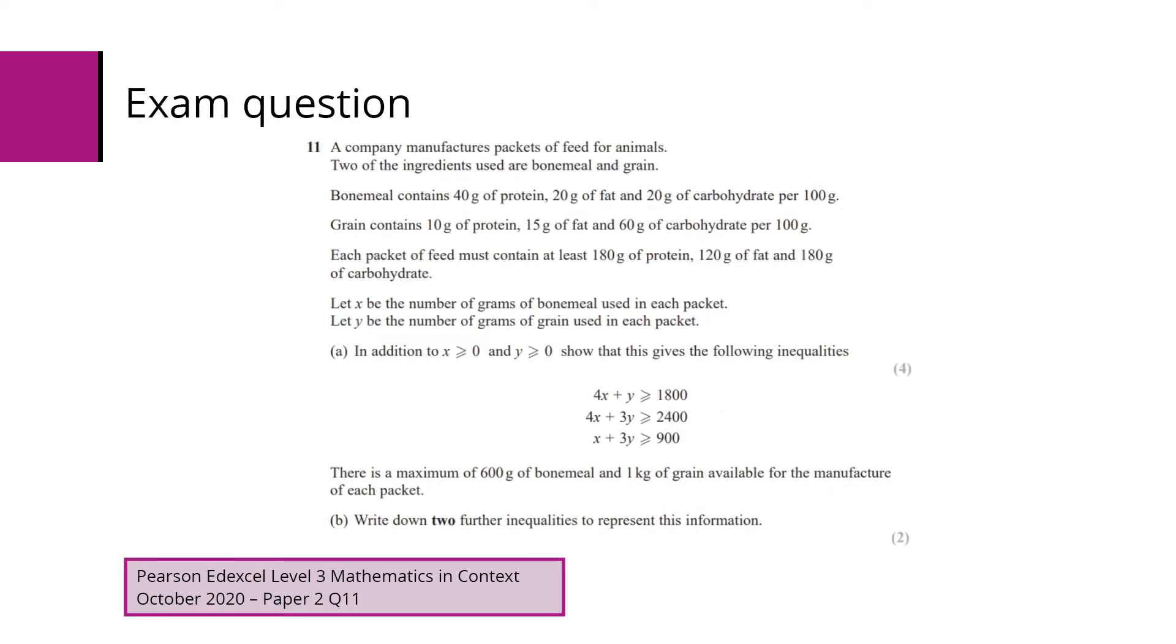So here's an exam question from 2020, paper 2, question 11. This one is about a company that manufactures packets of feed for animals. Two of the ingredients used are bone meal and grain. We've got the amounts of protein, fat and carbohydrate per 100 grams for bone meal and grain provided. Each packet of feed must contain at least 180 grams of protein, 180 grams of fat and 180 grams of carbohydrate.